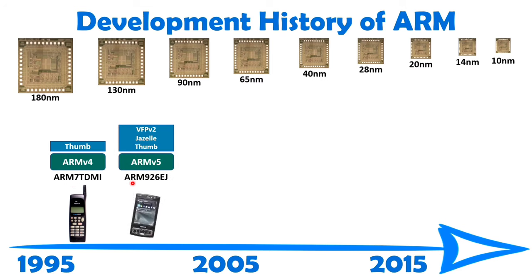After that they upgraded to ARM9, where the instruction set was ARMv5. Previous instruction sets were retained, but a few more features were added. They included Jazelle, with which ARM can execute Java instructions in hardware. They also added VFPv2, which provided advanced instructions not present in the previous ARM7 model.